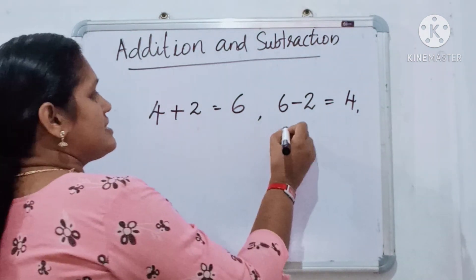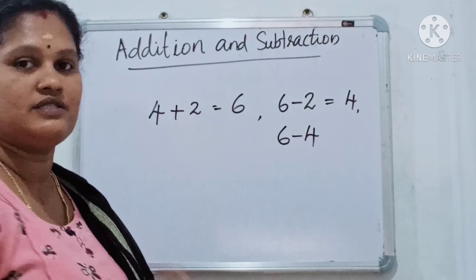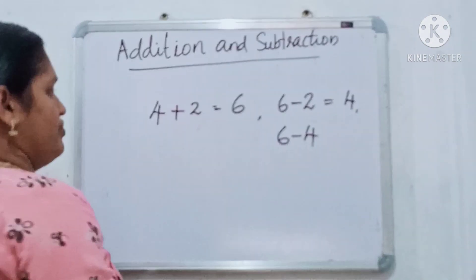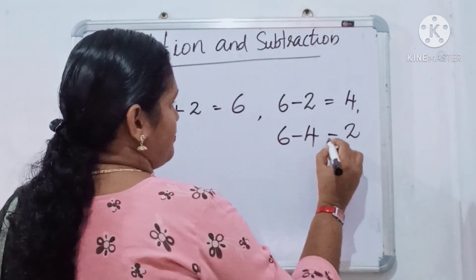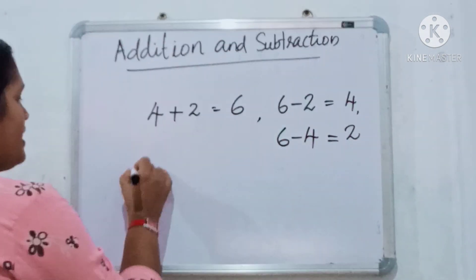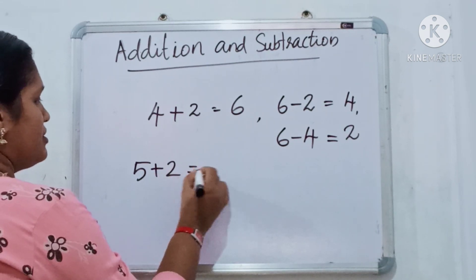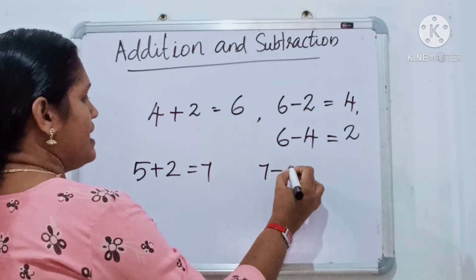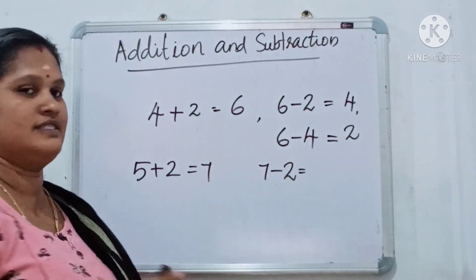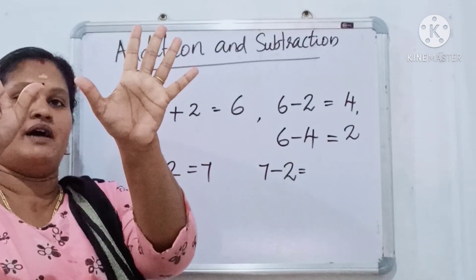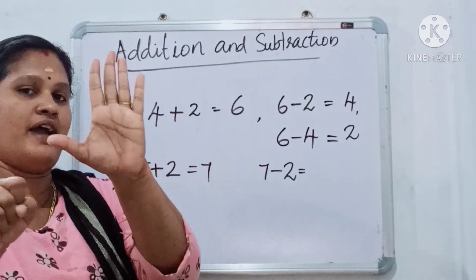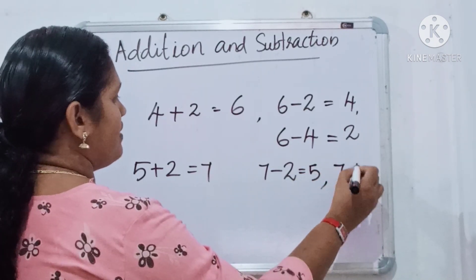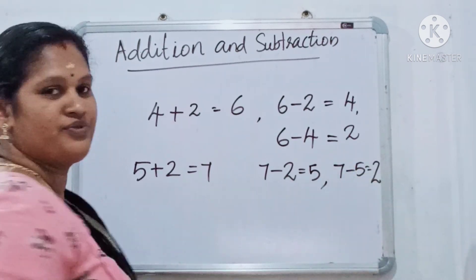And 6 minus 4 equals 2. Clear? Now, 5 plus 2 equals 7. How do we use subtraction here? 7 minus 2 equals 5, and 7 minus 5 equals 2. Clear?